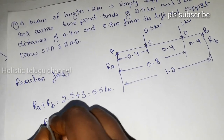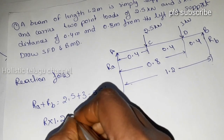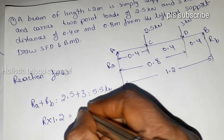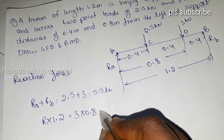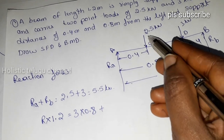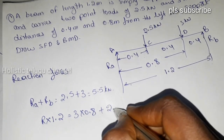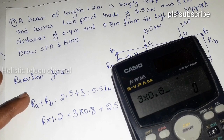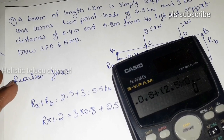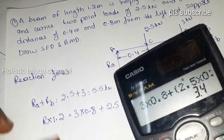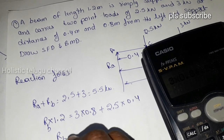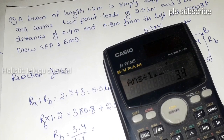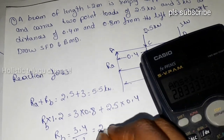Taking moments about A: Rb into total length 1.2 equals 3 kN into 0.8 plus 2.5 kN into 0.4. That gives 3 × 0.8 + 2.5 × 0.4 = 3.4. So Rb = 3.4 divided by 1.2, which equals 2.83 kN.